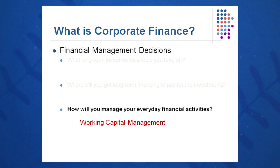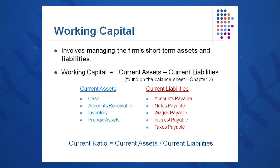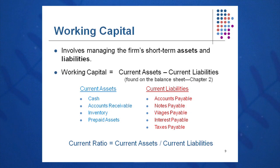The third decision on the mind of the CFO and CEO every day is: how will I manage my everyday financial activities? Here we're talking about working capital management. Working capital is current assets minus current liabilities. When we talk about working capital, we're talking about things like cash, accounts receivable, inventory, and prepaid assets as current assets. Current liabilities are things like accounts payable, notes payable, taxes payable, wages payable, and interest payable. When we subtract these two, we get working capital — and this must be managed every day. The key word is manage.